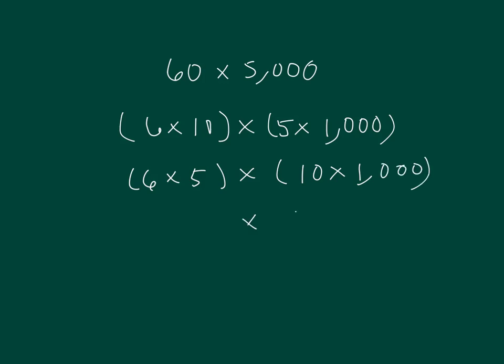10 times 1,000 is equal to 10,000. 6 times 5 is 30, so I have 3, 0, followed by 4 more zeros, or the number 300,000, as I simplify that and work that out.